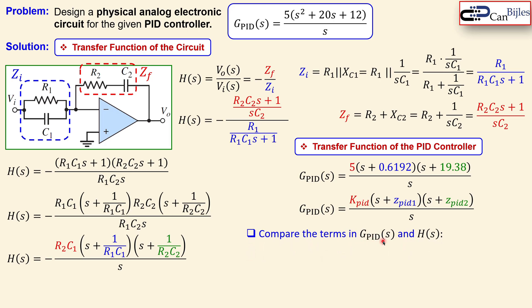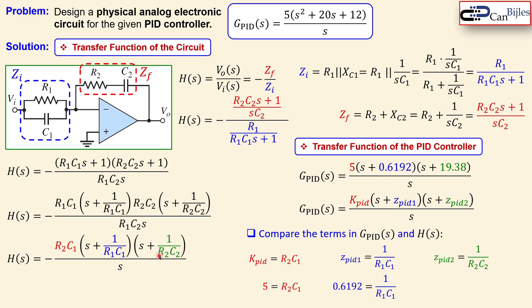Comparing the PID transfer function with the circuit transfer function, we identify: K_PID = R2·C1, the first zero Z_PID1 = 0.6192, and the second zero Z_PID2 = 19.38. In terms of component values: 5 = R2·C1, 1/(R1·C1) = 0.6192, and 1/(R2·C2) = 19.38. We now have three equations but four unknowns.